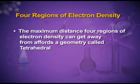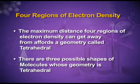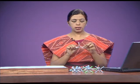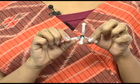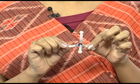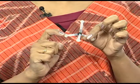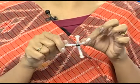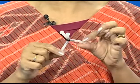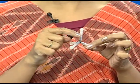When there are four regions of electron density, the maximum distance the four regions can get from each other affords a geometry called tetrahedral. In the tetrahedral geometry there are three possible shapes. The first and ideal case is methane, CH₄ — the black dot is carbon and the four surrounding atoms are hydrogen. This is a tetrahedral shape and the bond angle is 109.5 degrees.